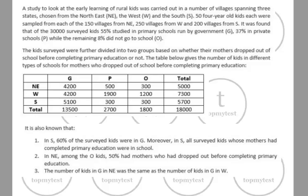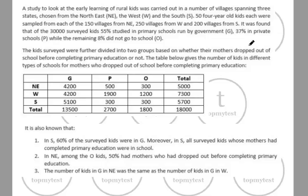This came in the first lot of the CAT 2017 LRDI section. This is a survey question, and you need to be a little careful. Attention to detail is more important than trying to find shortcuts. If you understand the data, we have a rough idea of how to go about solving this question.